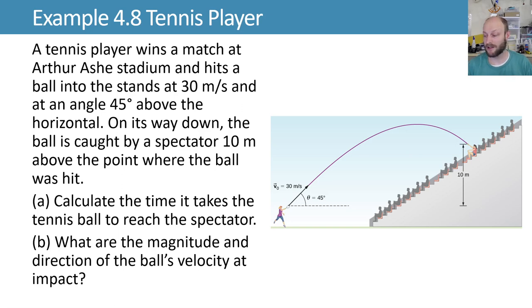A tennis player wins a match at Arthur Ashe Stadium and hits a ball into the stands at a certain initial velocity and direction. On its way back down, it's caught by a spectator 10 meters higher than where it started. We want to know how much time it takes the tennis ball to reach the spectator, and what's the magnitude and direction of the ball's velocity at impact.